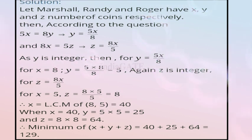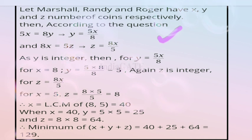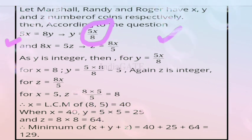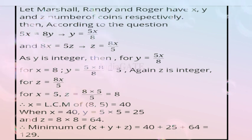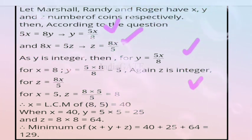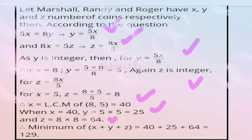Solution: let Marcel, Randy, Roger have x, y, z coins respectively. Then 5x = 8y, so y = 5x/8. And 8x = 5z, so z = 8x/5. For y and z to be integers, using LCM we get x = 40, y = 25, z = 64. Minimum x + y + z = 40 + 25 + 64 = 129.